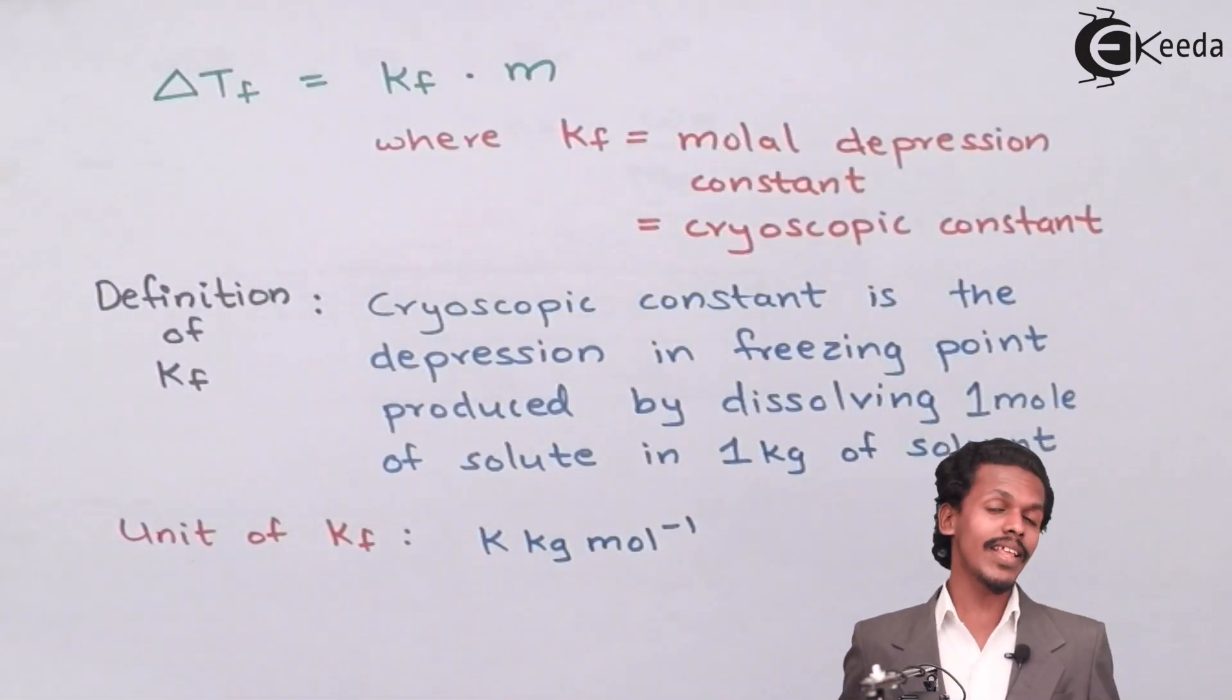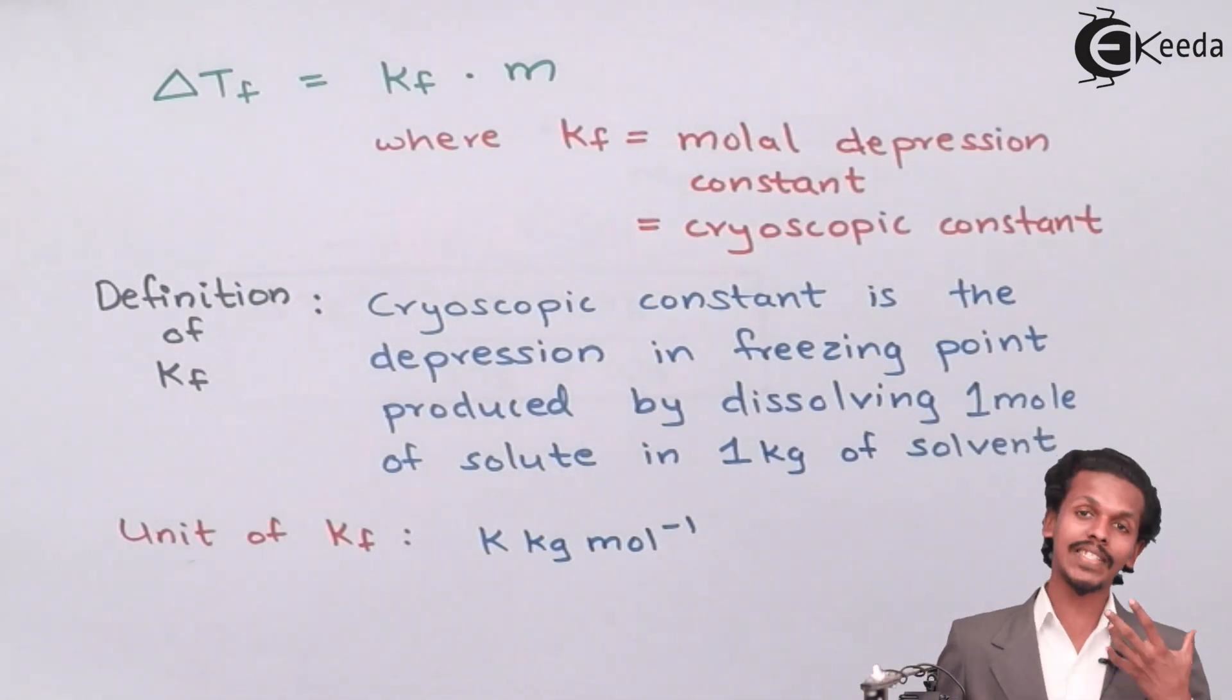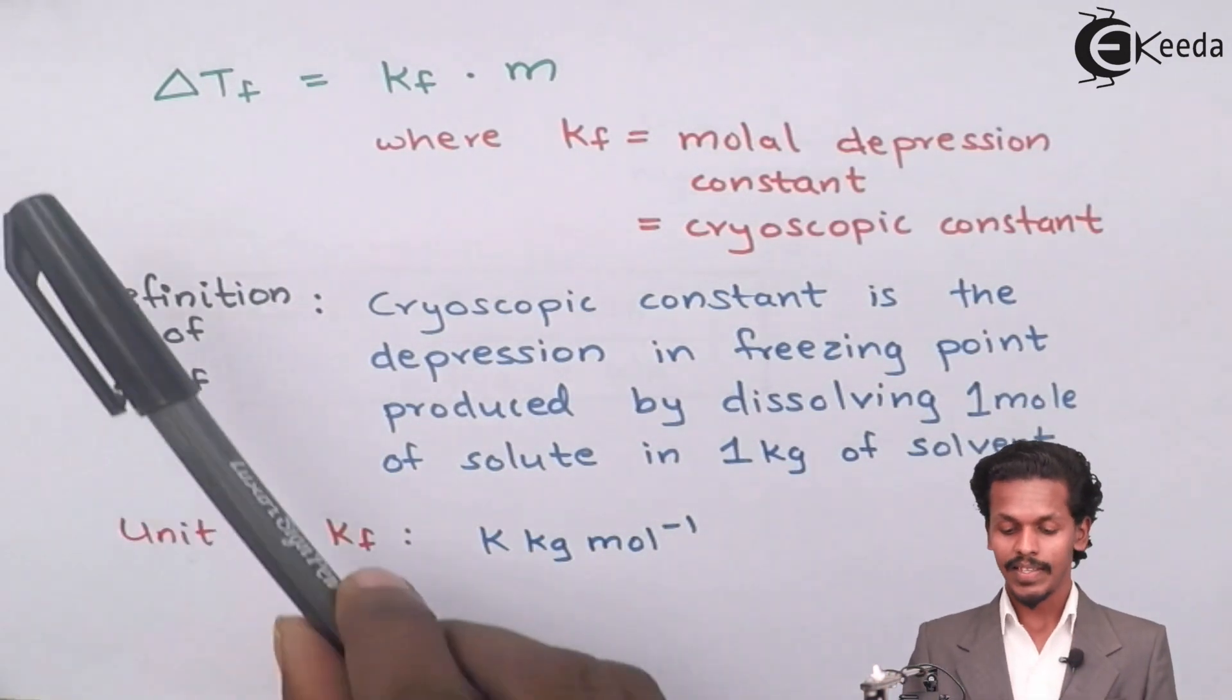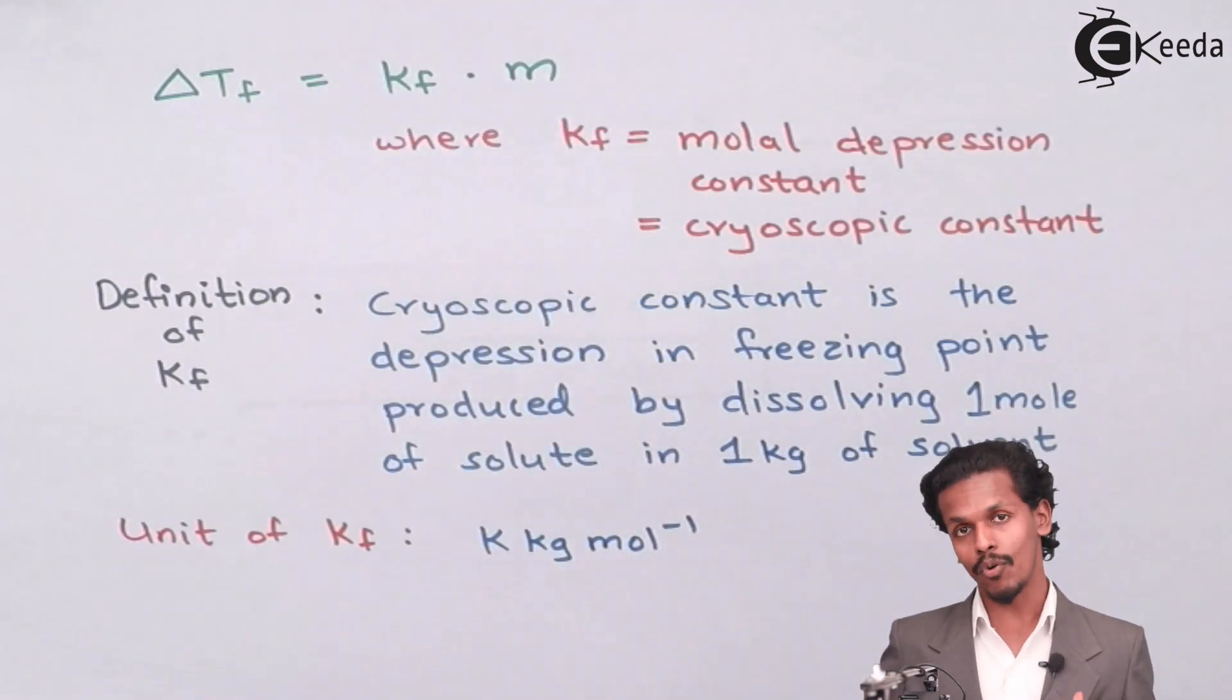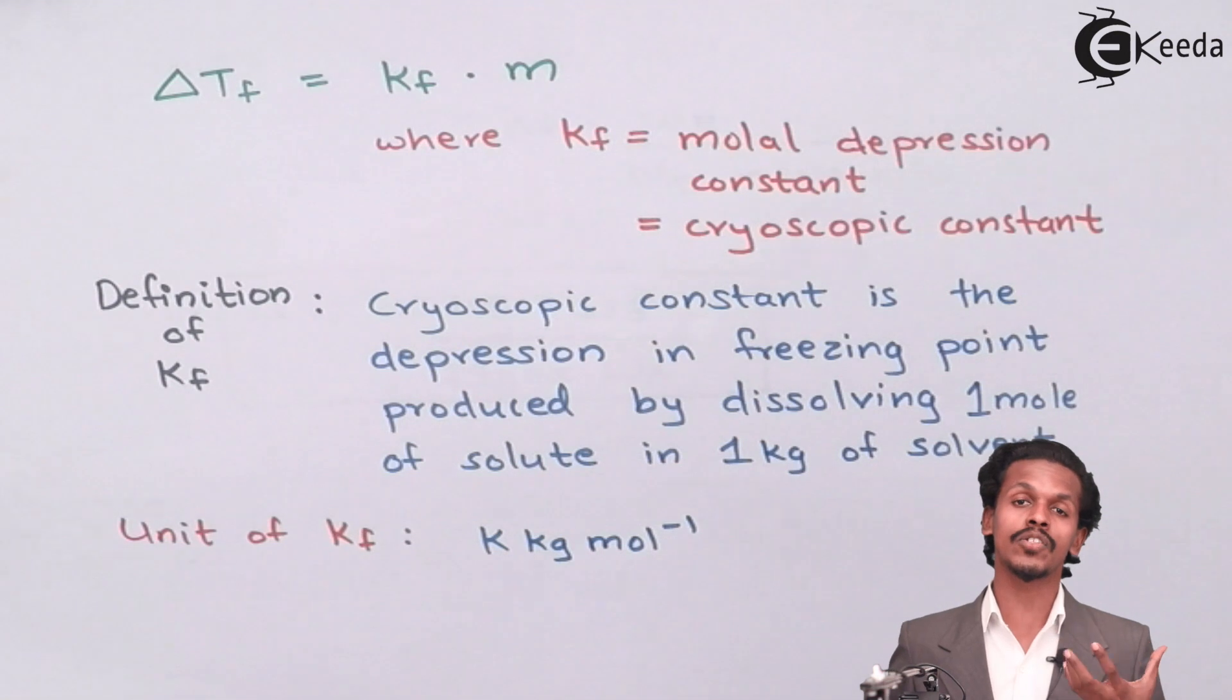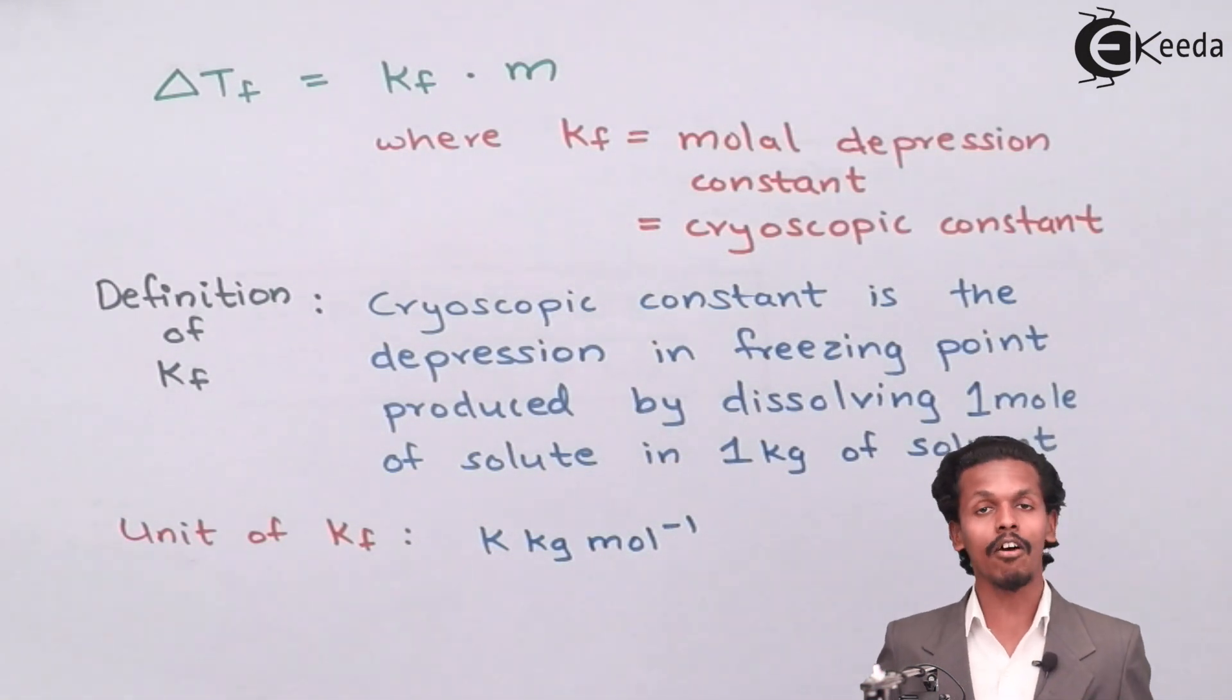So to equate this thing, we will get a constant. And what is that constant? Delta Tf is equals to Kf into m. This Kf is the constant that we have got. And this Kf is also known as cryoscopic constant or molal depression constant or freezing constant.